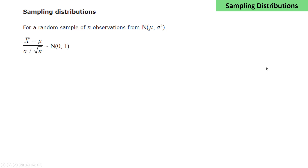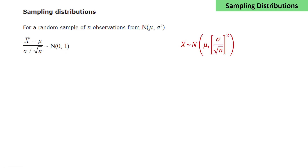Next, we have a formula relating to sampling distributions. For a random sample of n observations from a normally distributed random variable x with mean mu and standard deviation sigma, x-bar minus mu over sigma divided by the square root of n will be a normal distribution with mean 0 and standard deviation 1. More simply, the distribution of the means of these samples will be a normal distribution with mean mu and standard deviation sigma over the square root of n.